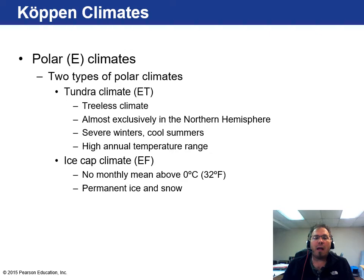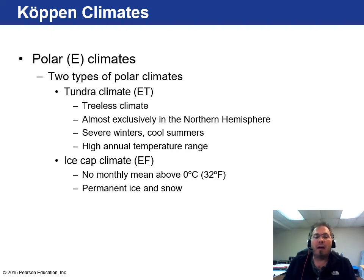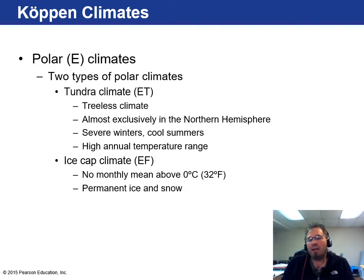You have the tundra climate, which is treeless and almost exclusively in the northern hemisphere — there's not much land mass in the southern hemisphere for it. You get severe winters and cool summers with a high annual temperature range. You might get occasional warm days, but they're few and far between, and the temperature swings are significant. Then you have the ice cap, where it never gets above freezing — in order to sustain that ice cap the water must be frozen, never above 32°F or 0°C.